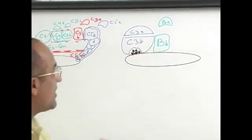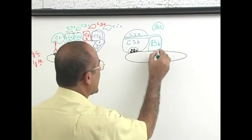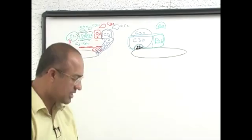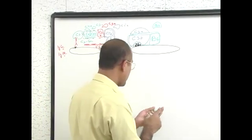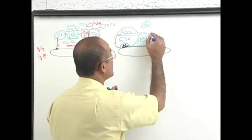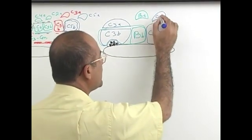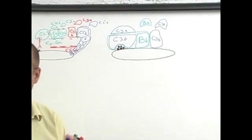These two together act as C3 convertase. So they activate one more molecule of C3. Another C3B deposited, and what has gone away? C3A.